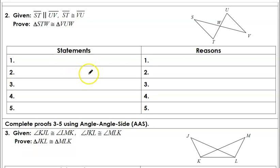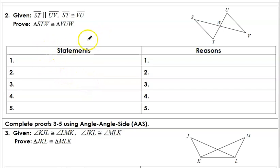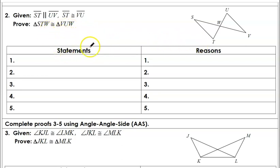This is a homework help video for Lesson 4-4. I've chosen a few homework problems to help you out. This is number two, and we're supposed to prove that these two triangles are congruent using Angle-Side-Angle.